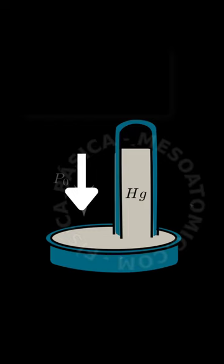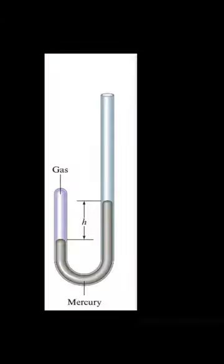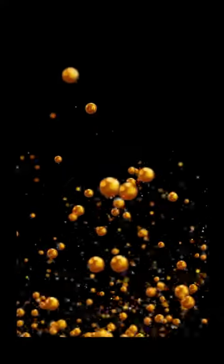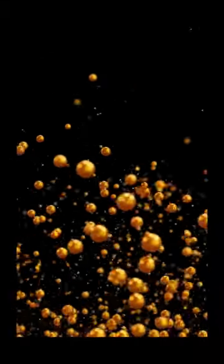A mercury barometer consists of a long glass tube filled with mercury, which is inverted into a container of mercury. The atmospheric pressure pushes down on the surface of the mercury in the container, forcing the mercury up the tube. The height of the mercury column in the tube is proportional to the atmospheric pressure.